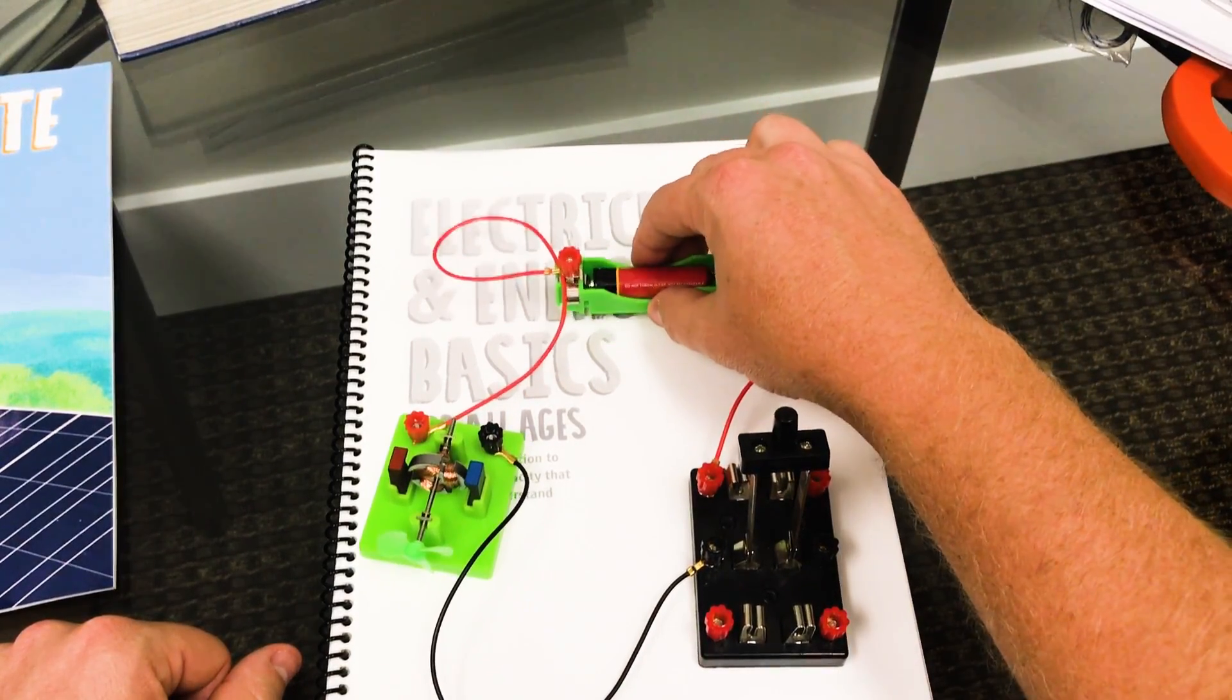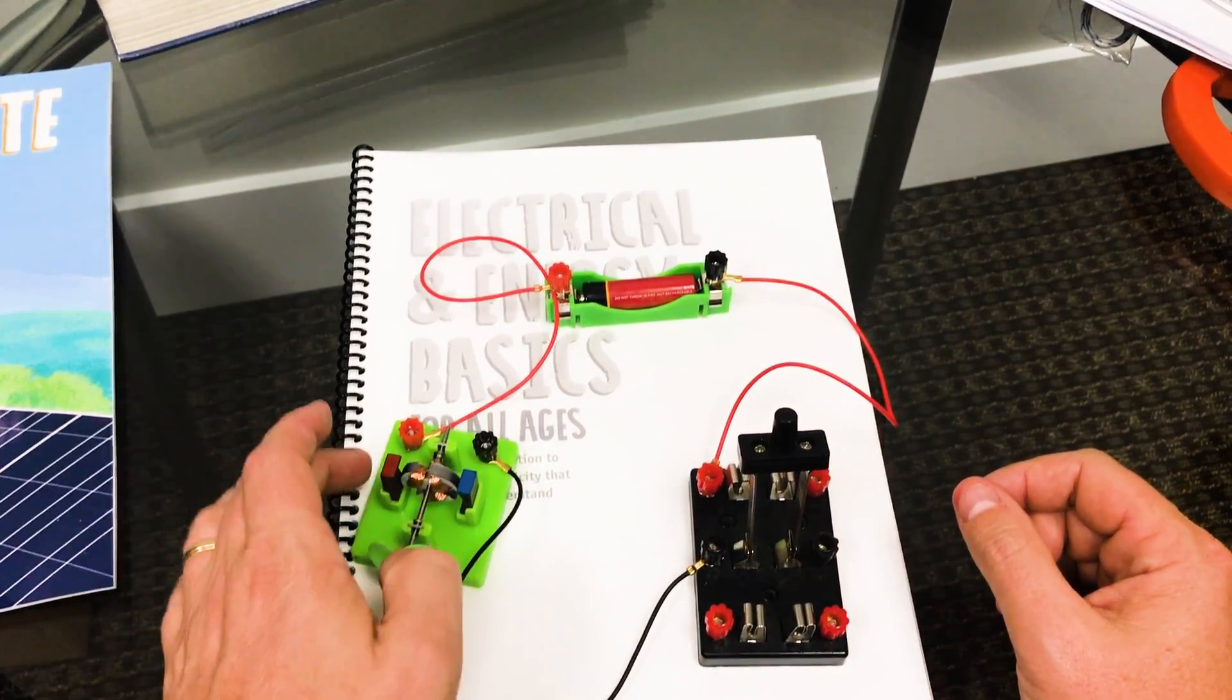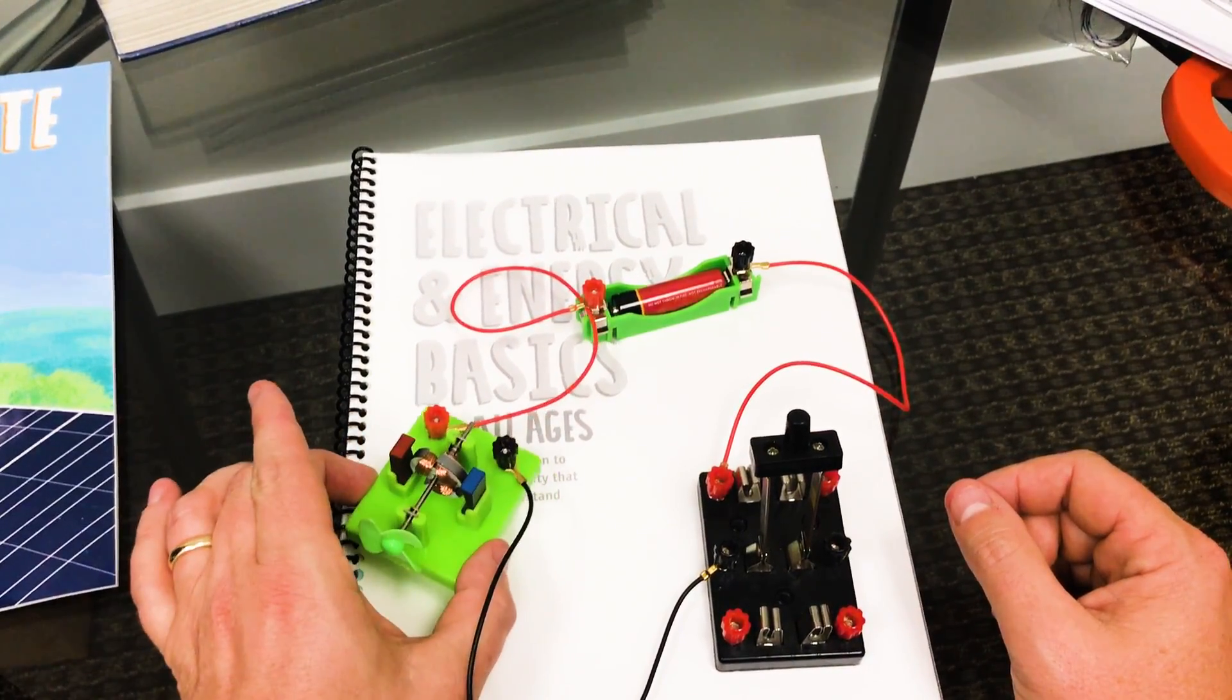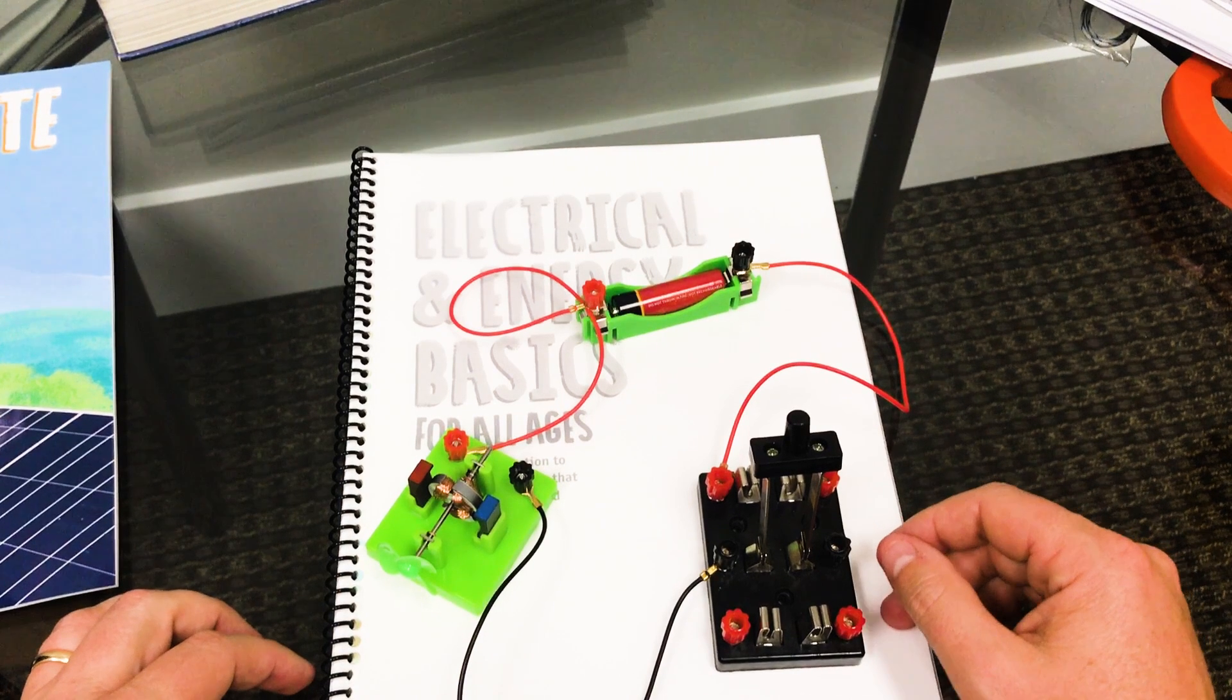Power supply provides the electromotive force or the potential difference. And the load is the thing that does whatever we're trying to accomplish, whether that's motion via magnetism, light, or heat. Thanks for watching.